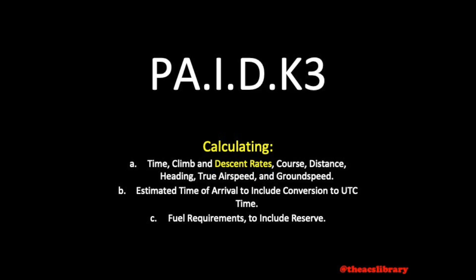I'll demonstrate two different ways to find top of descent in case your aircraft's POH is absent descent data. The Piper Archer's POH typically includes descent data, while the POH found in the Cessna 172 does not, for example. If your POH is equipped with descent data, please refer to that instead.